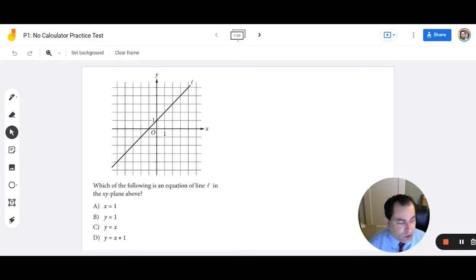In number one, what you should see immediately is that the y-intercept of this line is positive one. And then by looking at all the answer choices I can see that there's only one choice that has plus one for the y-intercept, making D the answer choice.